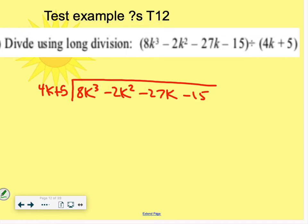And then we're just going to go through our steps, divide, multiply, subtract, bring down, and repeat. So when I divide, I take the first terms in each, 8k cubed, divided by 4k, is 2k squared. So I put that above the k squared terms.